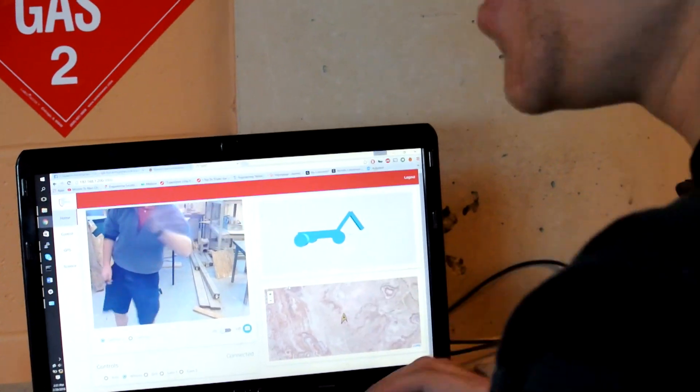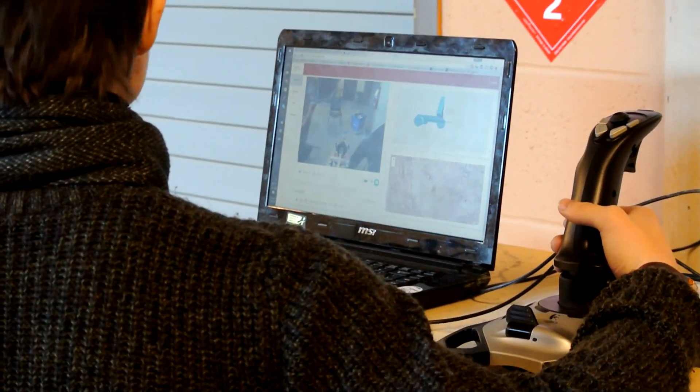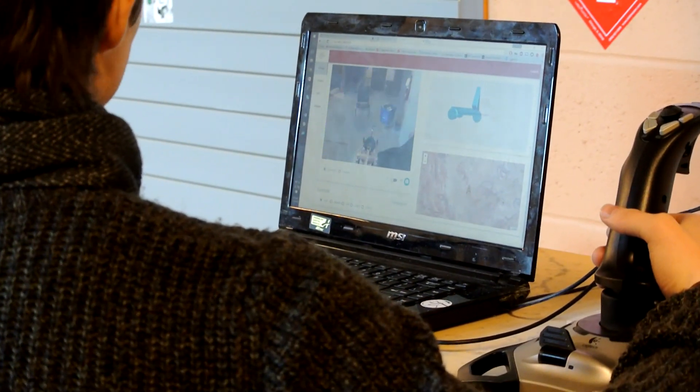The software used to control the rover has been completely redone this year and is instead served as an HTML5 web page. This allows for on-the-fly changes to the rover while also allowing multi-user access. For example, it will be possible for the science team to take sensor readings while the driver simultaneously pilots the rover.